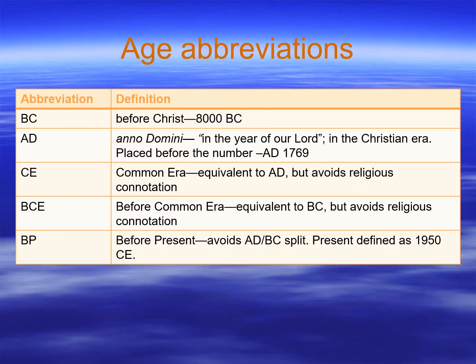This chart reviews information from the first lecture on how we use date abbreviations. You're probably used to B.C. and A.D., both of which have religious connotations referencing Christianity. Today, we use Common Era and Before Common Era — C.E. and B.C.E. Another system is B.P., or Years Before Present, which avoids the A.D./B.C. split. The present for B.P. is defined as 1950 C.E., and we'll talk about why in a later lecture on radiocarbon dating.